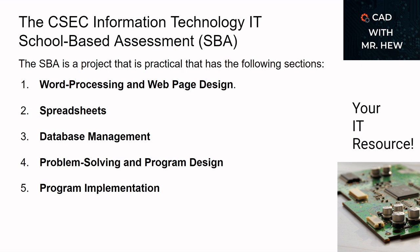The CSEC Information Technology SBA has five sections. The first section is word processing and web page design. The second section is spreadsheets. The third section is database management. The fourth section is problem solving and program design, where you use flowcharts and algorithms to help define your solution. The fifth section is program implementation, where you code your solution to the problem using the software your teacher specifies for the SBA.